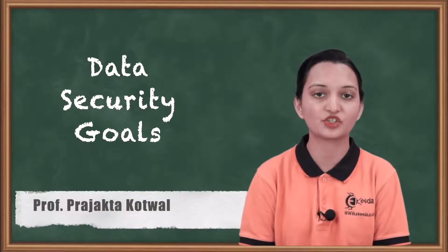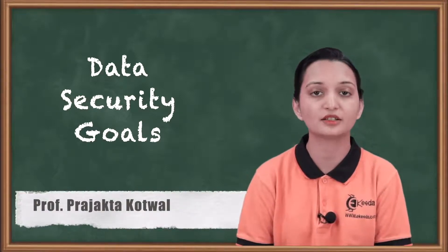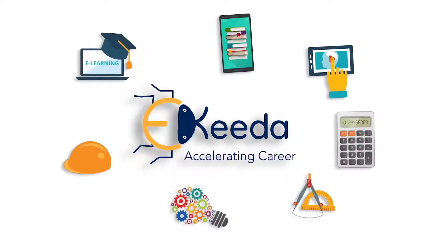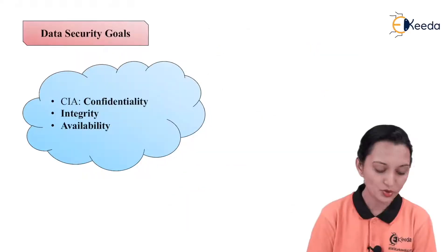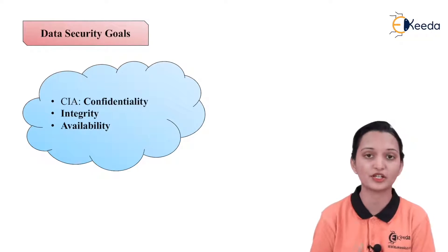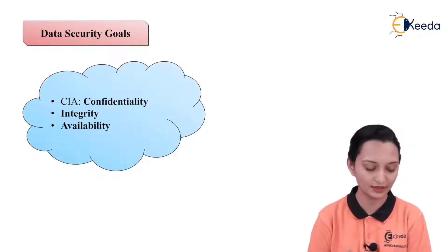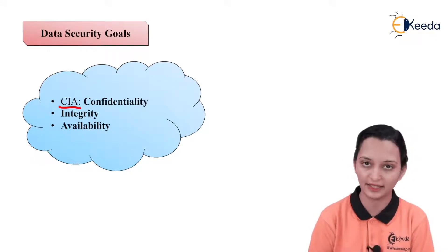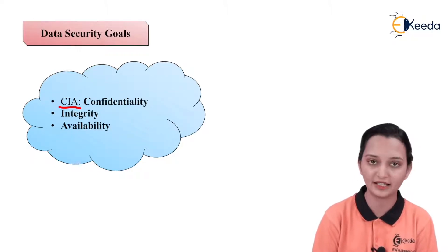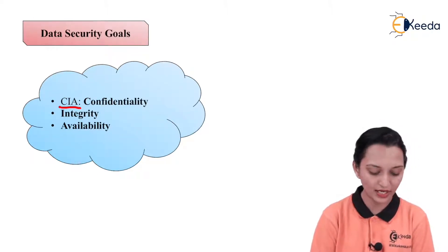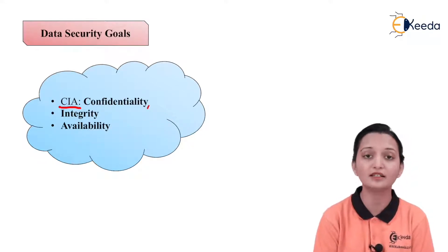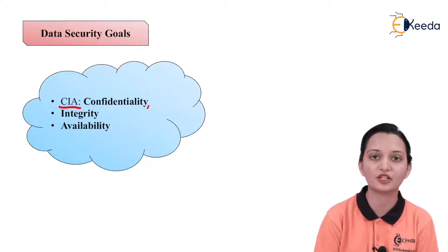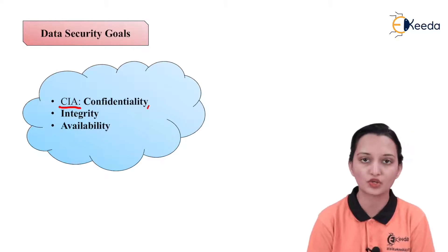Hello friends, in this particular video lecture, we will try to understand the goals of data security. Basically, why we are interested to study data security? What are the aims behind data security? They are going to be represented with the help of a notation CIA — that is nothing but confidentiality, integrity, and availability. We have to study the meaning of everything and the respective application, so that we can understand why data security is necessary and what are the goals of data security.